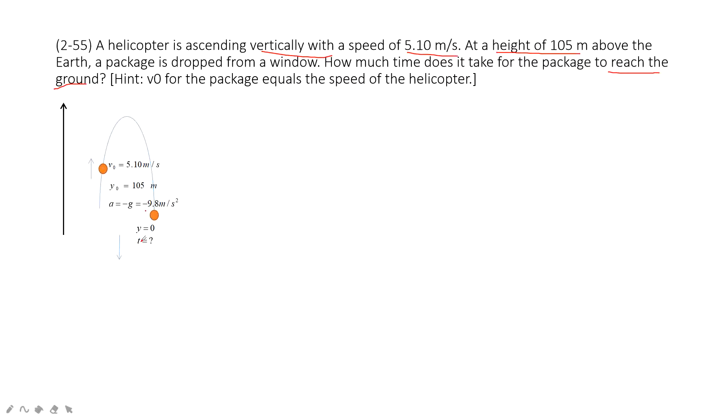So after you list the known quantities and unknown quantities, you can see you know the initial velocity, you know initial position, you know final position, and you also know the acceleration. You want to know the t. So which equation you choose? The position with the time t. This equation, do you agree?